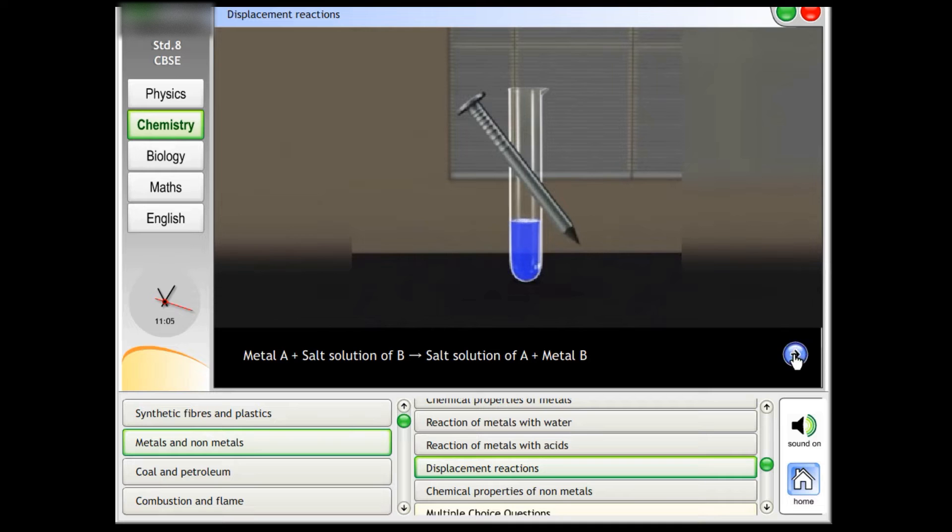Metal A plus salt solution of B gives salt solution of A plus metal B.